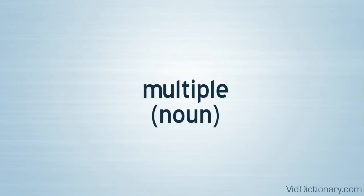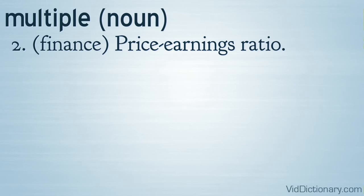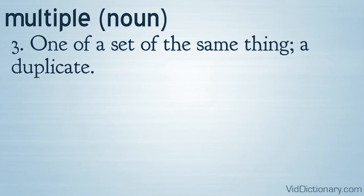Part of speech: Noun. Three definitions. Definition 1: Mathematics — a number that may be divided by another number with no remainder. Definition 2: Finance — price earnings ratio. Definition 3: One of a set of the same thing; a duplicate.